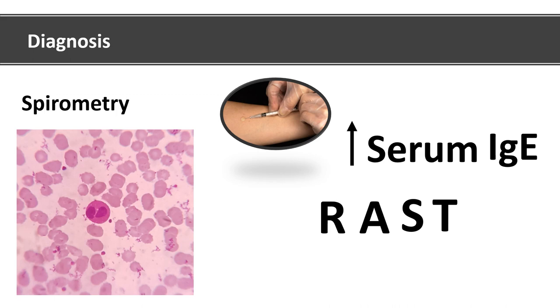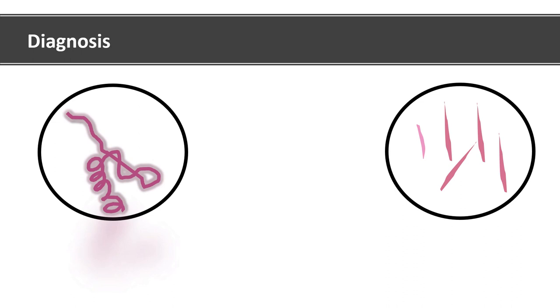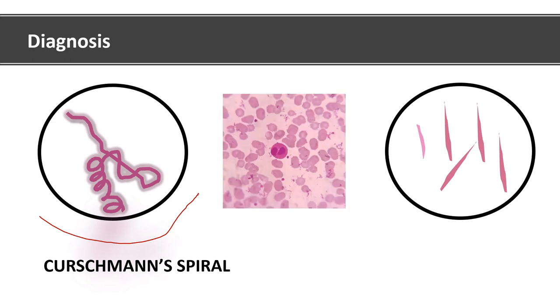There will be increased total serum IgE level as well as RAST will come positive, that is radioallergosorbent test, which will detect your IgE antibodies against specific allergens. Sputum or bronchoalveolar lavage specimen of the patient will show Curschmann spirals, which are actually mucus plugs which are extruded from the subepithelial mucous gland ducts or bronchioles. Also present will be numerous eosinophils and Charcot-Leyden crystals.